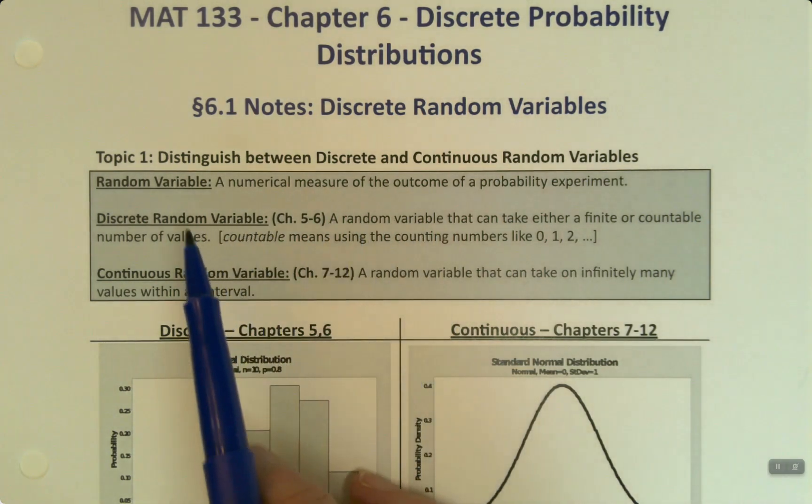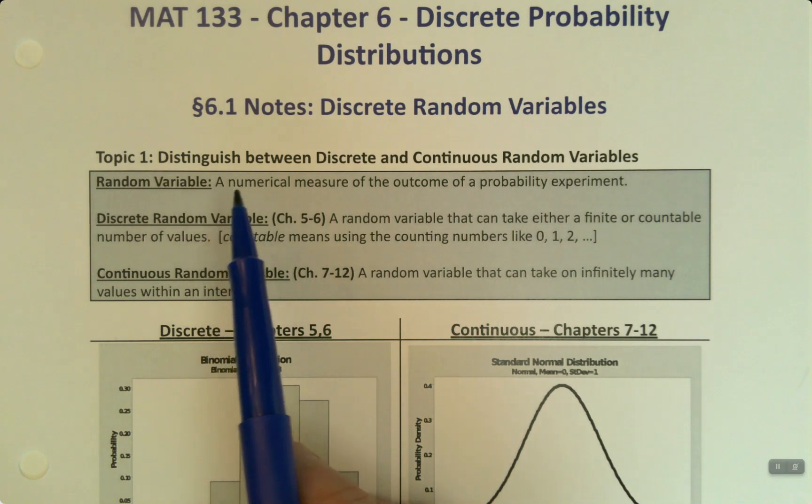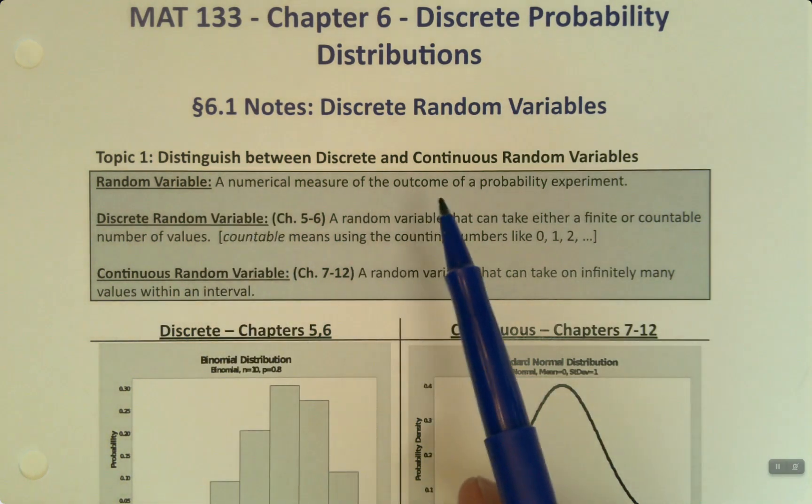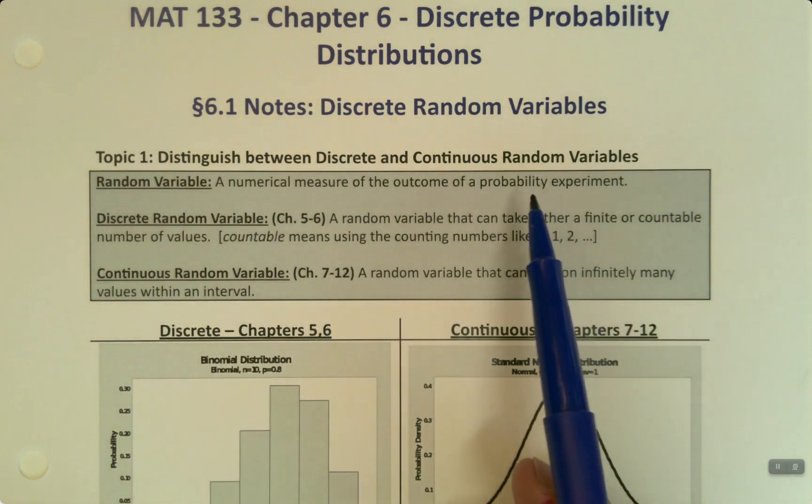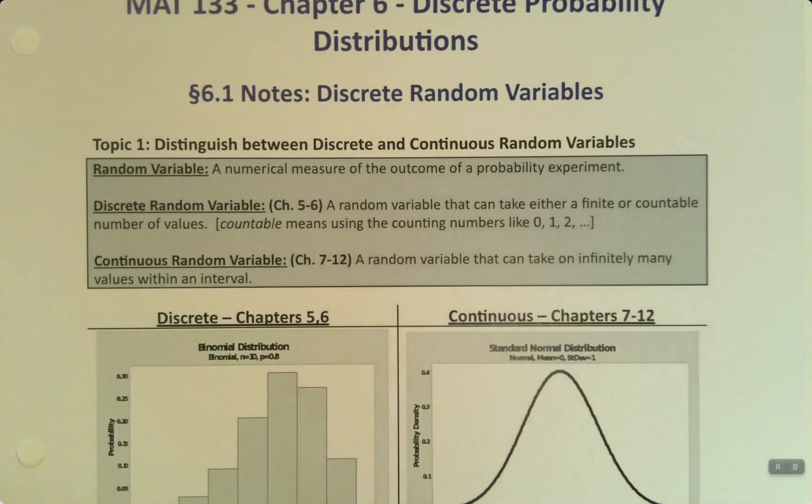Of course, we learned those definitions back in Chapter 1 when it was having to do with data. The difference here is that this is a random variable. So, this is some numerical measure of the outcome of a probability experiment. So, it's a future potential data, but it doesn't actually exist because it's in the future.